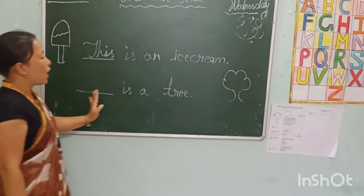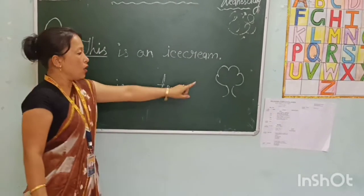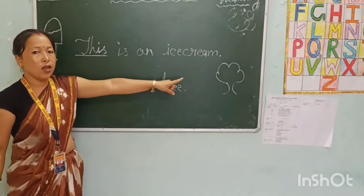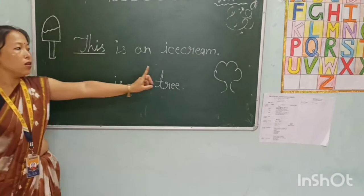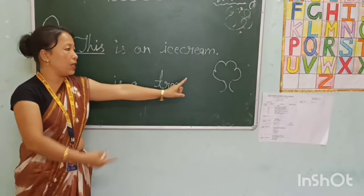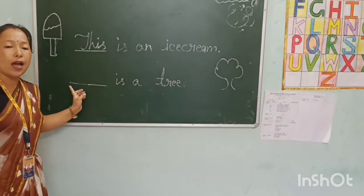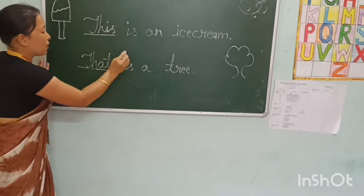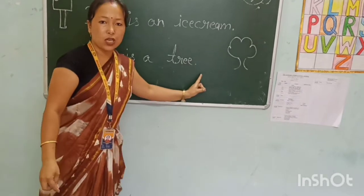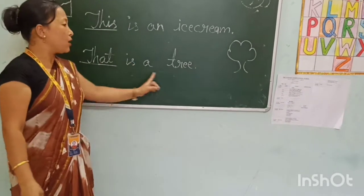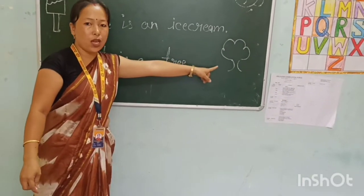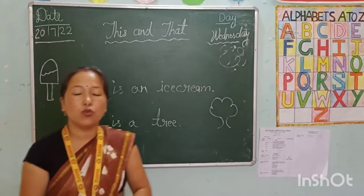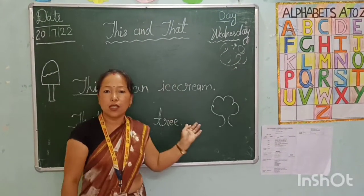Come to the next sentence: dash is a tree. That tree is far from me. Yeh tree woh mere se door hai. That means we use here that. T-H-A-T. That is a tree. Wohai ek tree hai. So children, you have to use this and that like this.